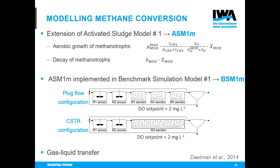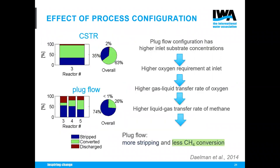For the reference case, we replaced the three aerobic tanks with a single completely mixed CSTR and included an appropriate description of gas-liquid transfer. We compared two process configurations: the single aerobic CSTR and plug flow modeled as three CSTRs in series with the same total aerobic volume. The graphs show the percentage of incoming methane that is stripped (blue), emitted (red), and converted (green) — the green is what we want.